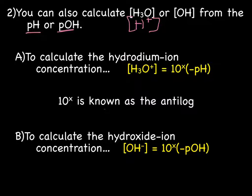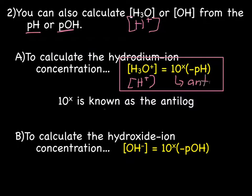To calculate the hydronium concentration, or the H+ concentration, you're going to use this formula here: the concentration of H3O equals 10 to the X of the negative pH. 10 to the X is what we call the anti-log. And to calculate the hydroxide ion concentration, you're going to use the formula hydroxide concentration equals 10 to the X, or anti-log, of negative pOH.